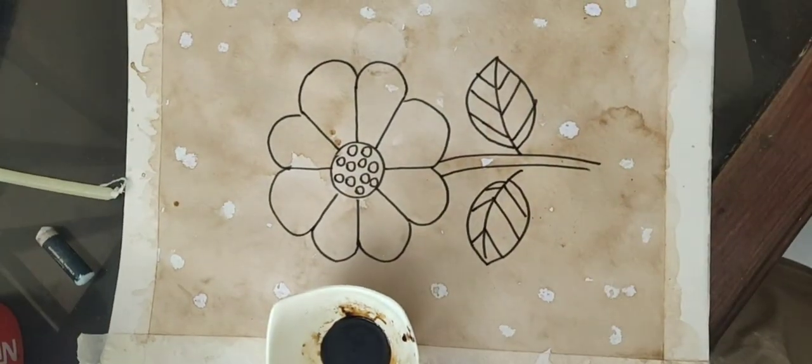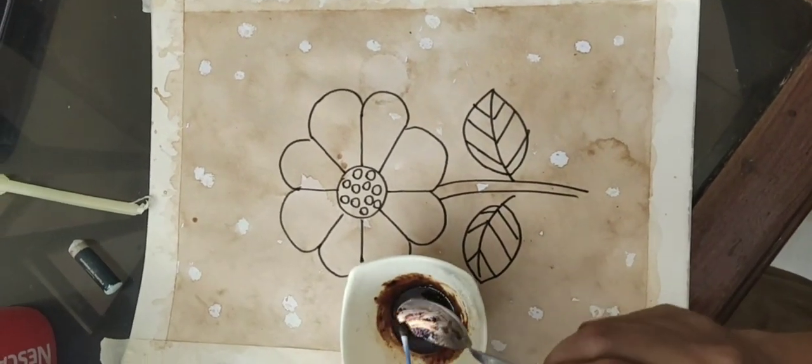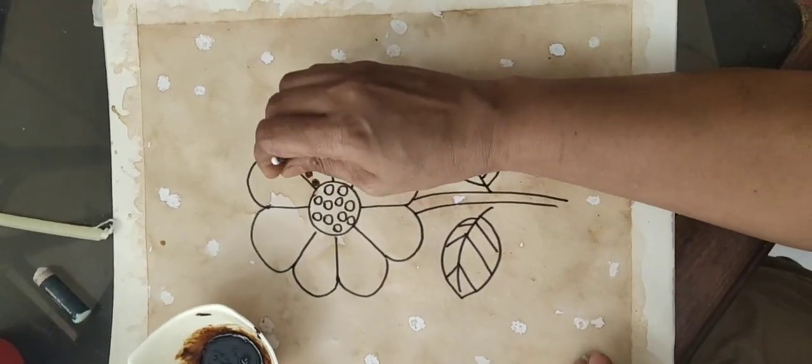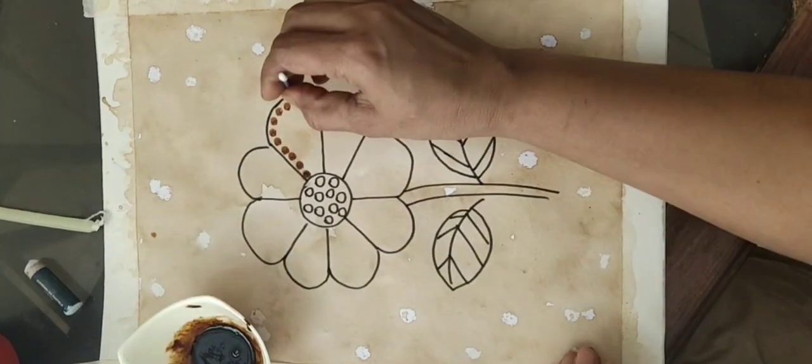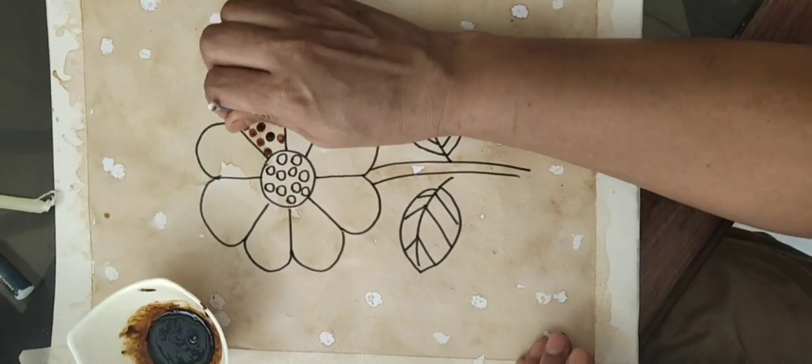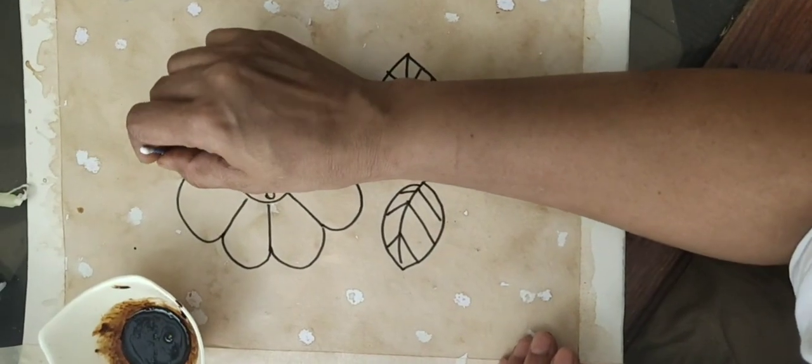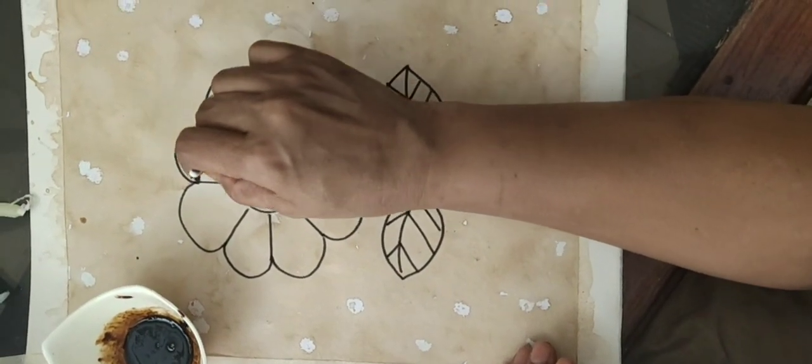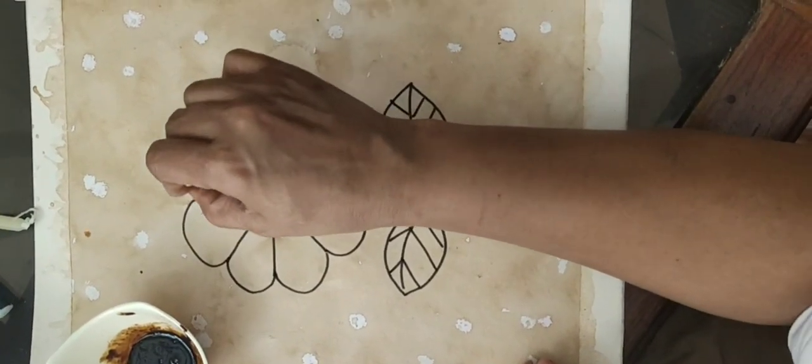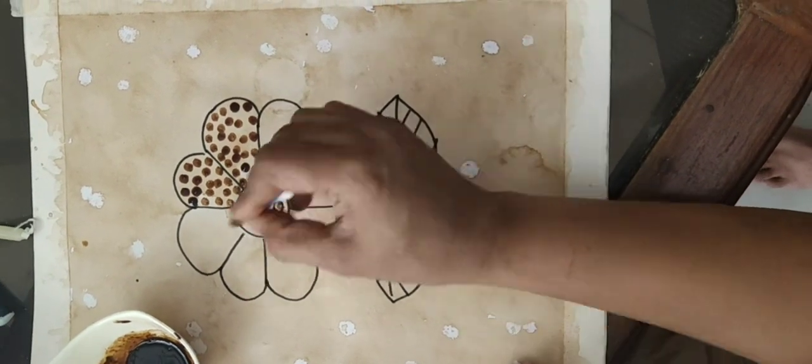Now just check the consistency. It is a little bit thick. Now I will start making dots with the help of cotton swab. Dab the cotton head into the coffee mixture and then put dots on paper. We will follow this same technique in each petal of the flower.